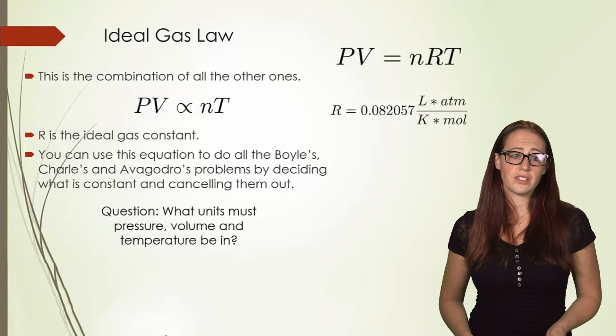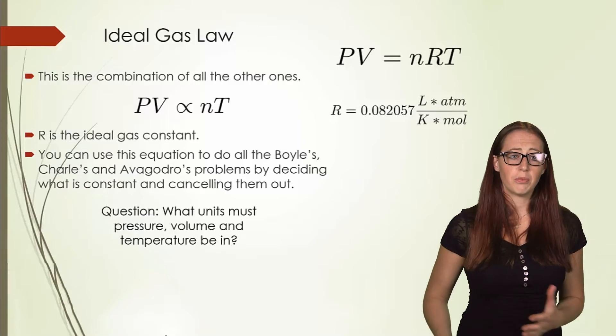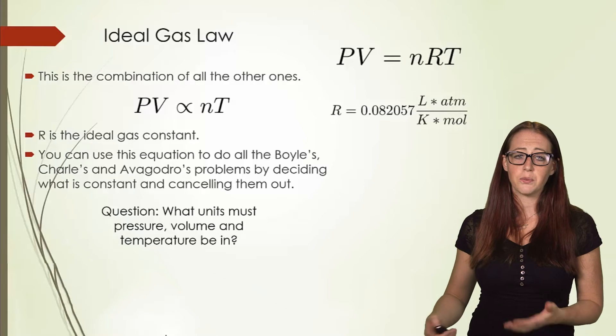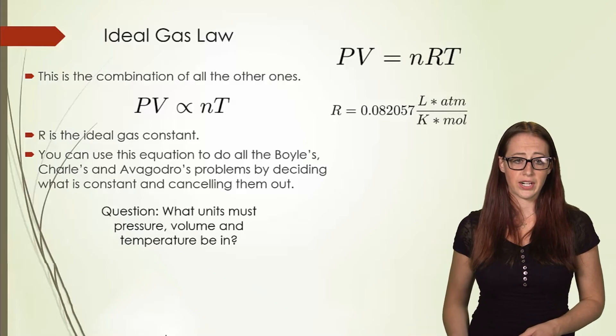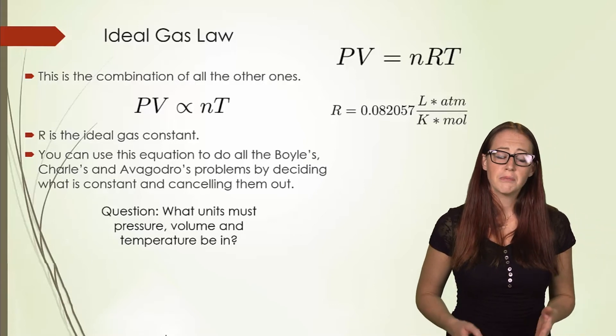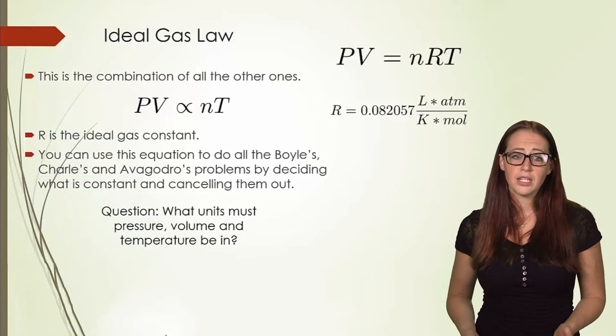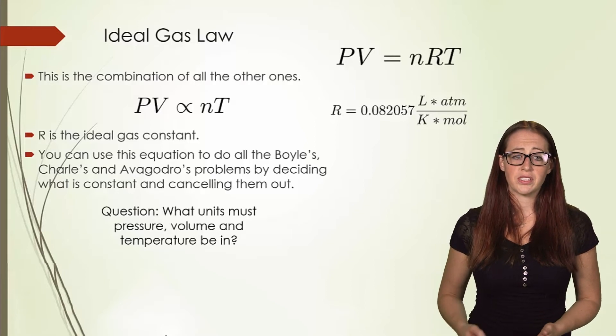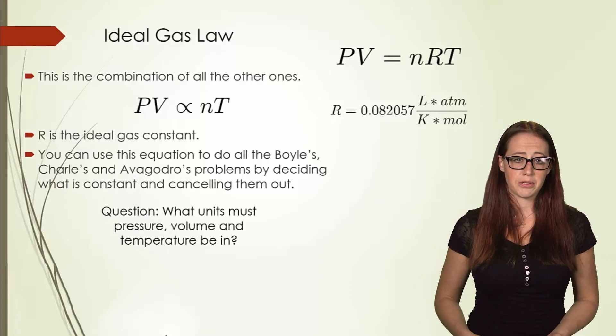Now, we can use this equation to do pretty much all of Boyle's, Charles and Avogadro's law problems by deciding what is constant and what is canceling each other out. Before we move on with doing that though, let's think about what our units of pressure, volume, and temperature must be in.